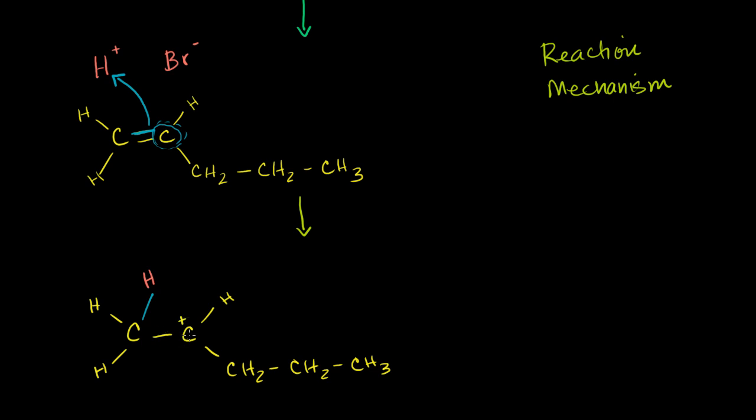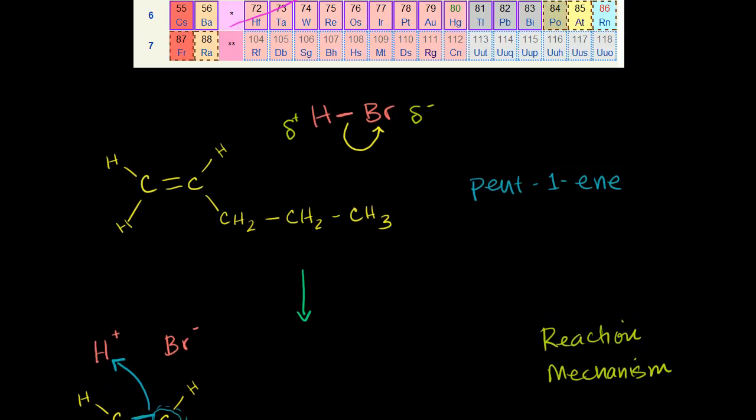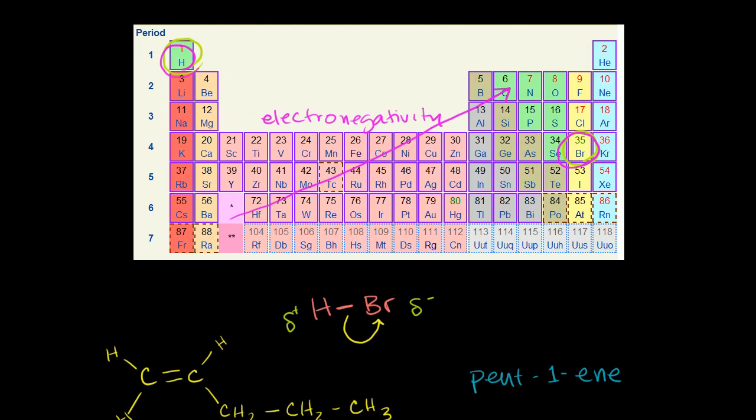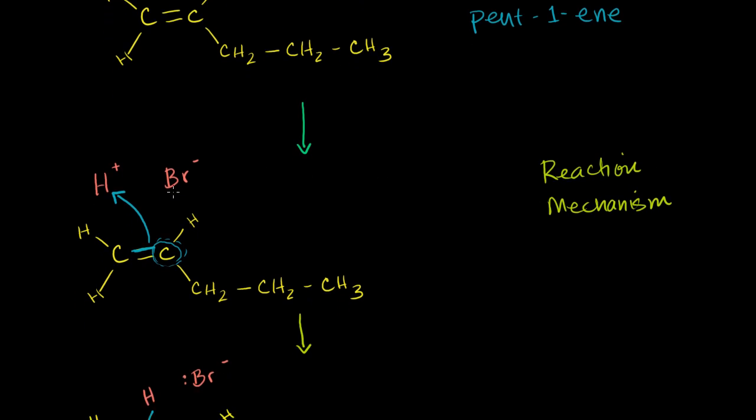He would really like access to an electron. And we can't forget that we have our bromine sitting there with a negative charge. And if we want, we can actually draw its valence electrons. Bromine typically has seven valence electrons, but it stole an electron. It has a negative charge now, so now it has eight valence electrons. So we can actually draw it: one, two, three, four, five, six, seven, eight valence electrons.